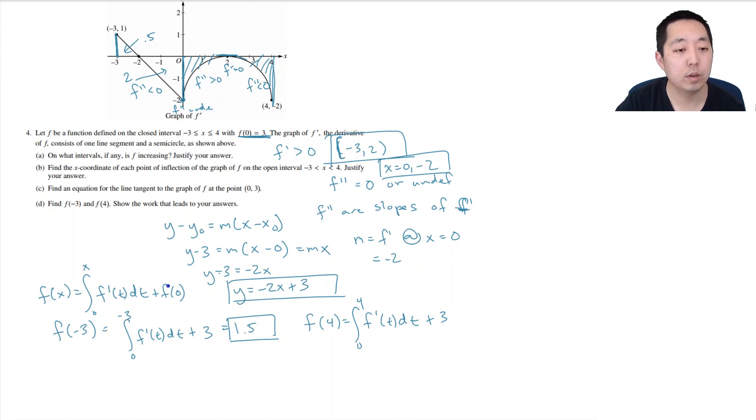And then I'm going to add that to 3. Oh, did I do plus 3? Oh no, no, no. I did the area. 2 minus 0.5 is 1.5. 1.5 plus 3 is 4.5. Caught myself there.